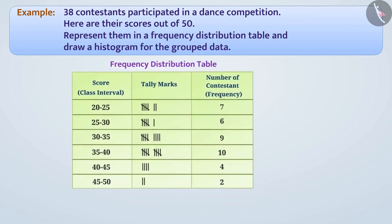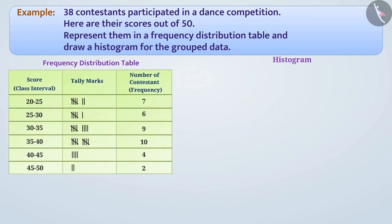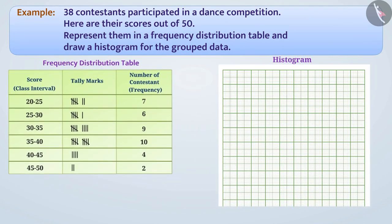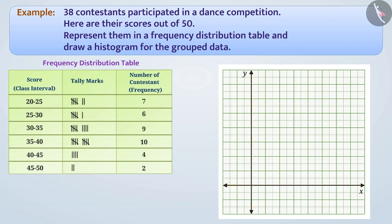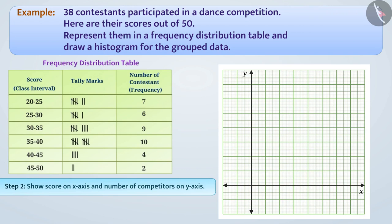Let us now draw a histogram with the help of frequency distribution table. Draw two mutually perpendicular lines on the paper. The horizontal line is the x-axis and the vertical line is the y-axis. We will show the score on the x-axis. Here, we make a kink sign to state that we are not showing scores from 0 to 20.